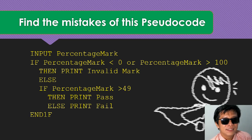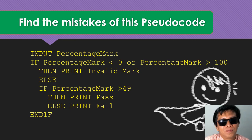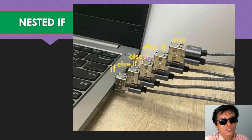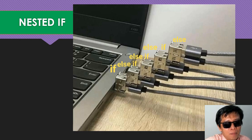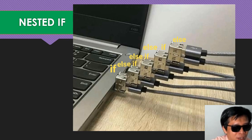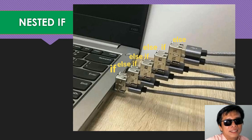Can you find the three mistakes in this pseudocode? Pause it and try to find it out. Now this one is a nested IF joke - you see there are IF and ELSE, and in this ELSE you fit in another ELSE IF - another IF - and in the ELSE you put another IF, and so on. This one is a super super duper nested IF.